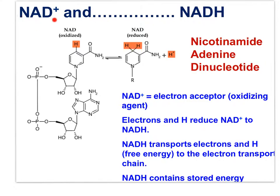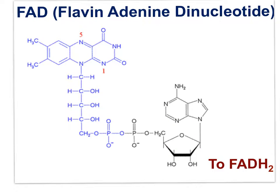NAD+ is an electron acceptor, serving to oxidize organic intermediates in respiration. As NAD+ grabs electrons and hydrogen, it becomes reduced to NADH. NADH transports electrons and hydrogen to the electron transport chain, and contains stored energy in the position of the electrons it carries. FAD also serves to oxidize organic intermediates to become reduced to FADH2, which also transports electrons and hydrogens to the electron transport chain with stored energy.